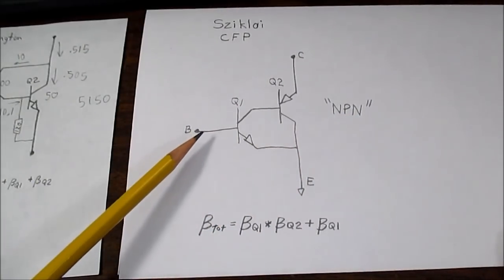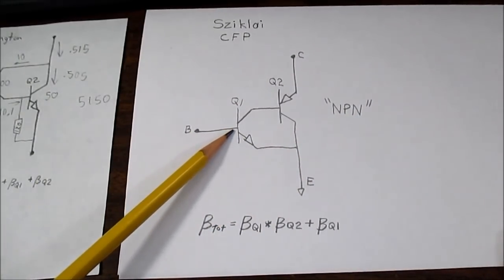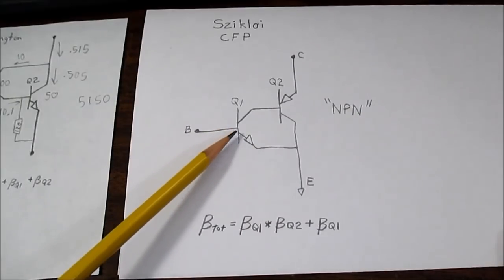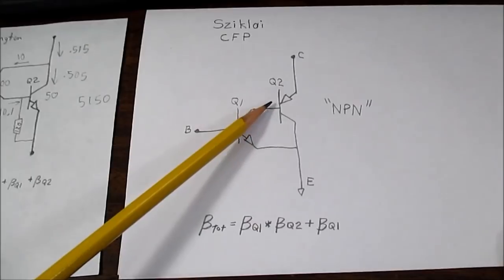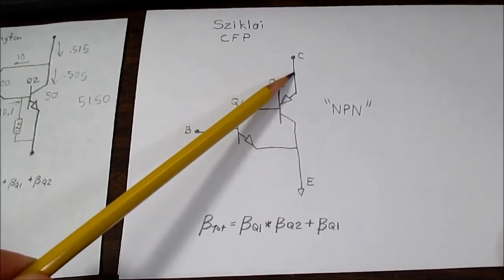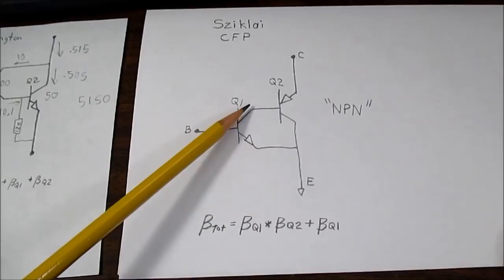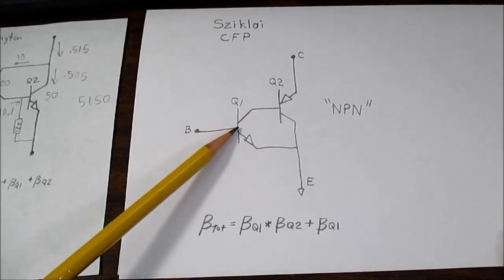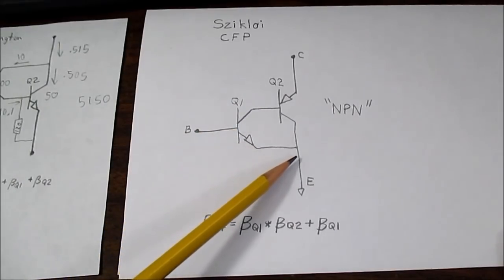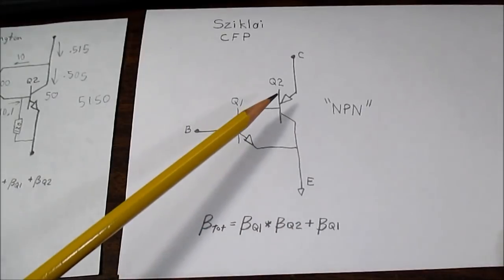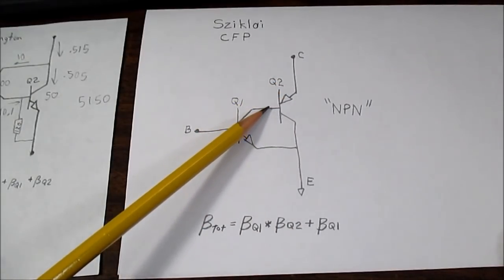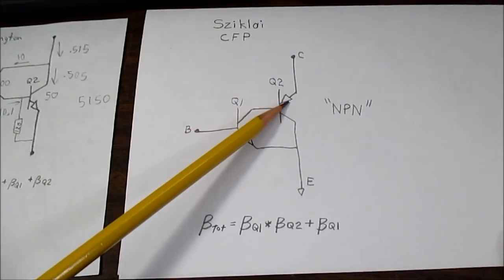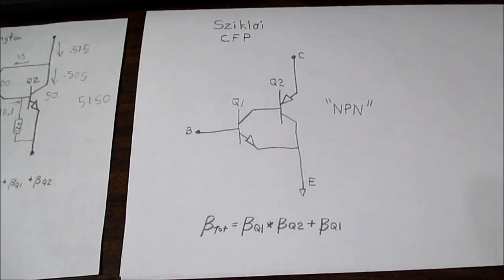So how this works is if you put a voltage on the base of Q1 and turn this on, this junction is already forward biased on Q2 so current is going to pass through here. Now that this is conducting it's going to allow the current to pass through, and since current is now going through the emitter to base junction of Q2 it can now conduct. That's the basics of how this works.